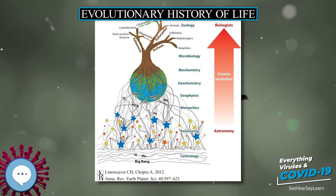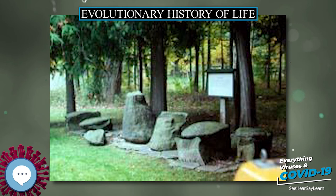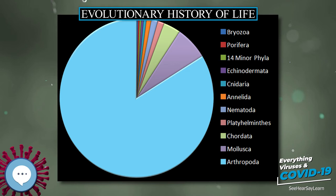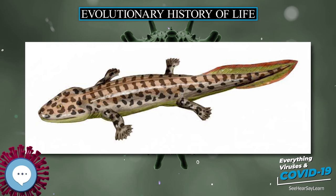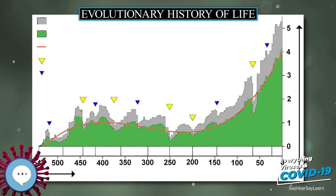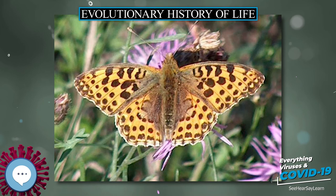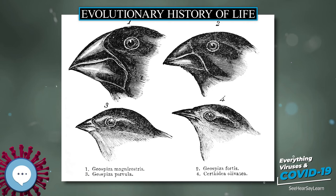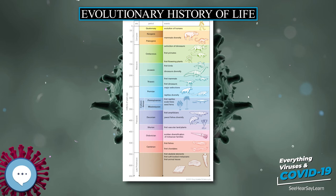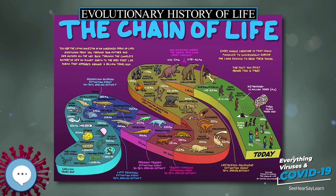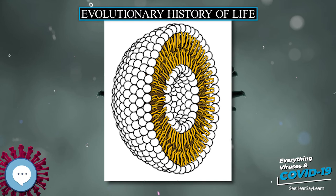In the 1970s there was already a debate about whether the emergence of the modern phyla was explosive or gradual but hidden by the shortage of pre-Cambrian animal fossils. A reanalysis of fossils from the Burgess Shale Lagerstätte increased interest in the issue when it revealed animals such as Opabinia, which did not fit into any known phylum. At the time these were interpreted as evidence that the modern phyla had evolved very rapidly in the Cambrian explosion, and that the Burgess Shale's weird wonders showed that the early Cambrian was a uniquely experimental period of animal evolution. Later discoveries led to the conclusion that many of the weird wonders were evolutionary aunts or cousins of modern groups. Nevertheless, there is still much debate about whether the Cambrian explosion was really explosive and, if so, how and why it happened.